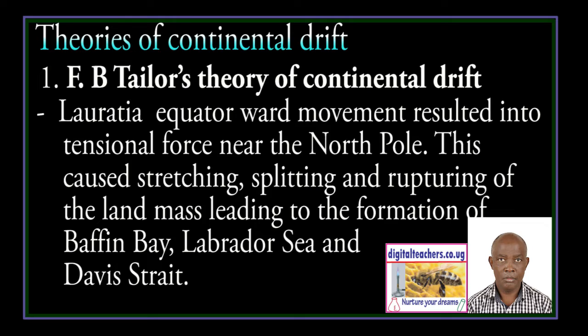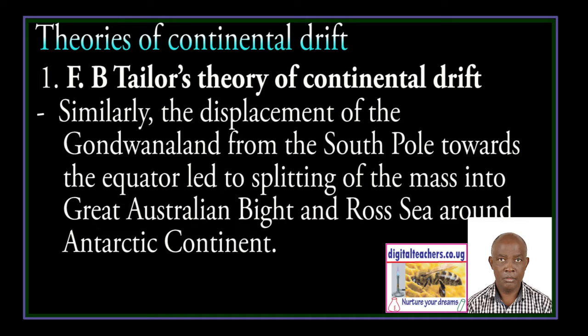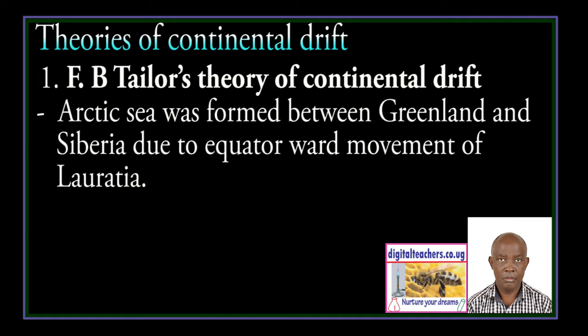The equatorward movement resulted in tensional forces near the North Pole. This caused the stretching, splitting, and rupturing of the land mass, leading to the formation of Baffin Bay, Labrador Sea, and Davis Strait. Similarly, the displacement of Gondwanaland from the South Pole towards the equator led to the splitting of the mass, forming the Great Australian Bight and the Ross Sea around the Antarctic continent. The Arctic Sea was formed between Greenland and Siberia due to the equatorward movement of Laurasia.